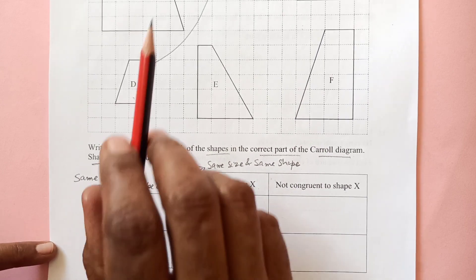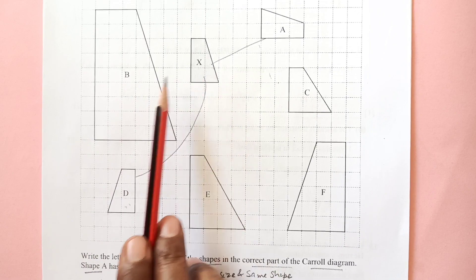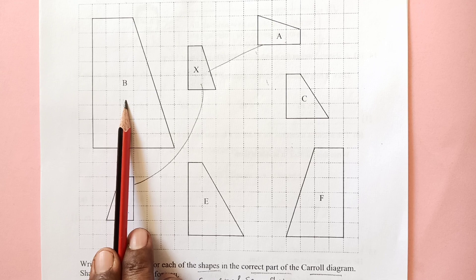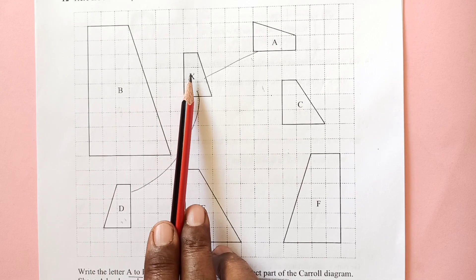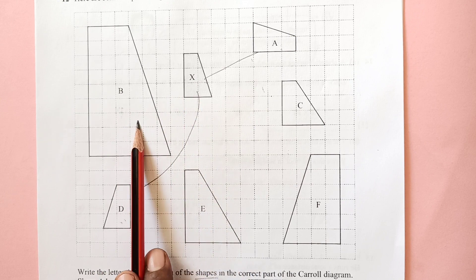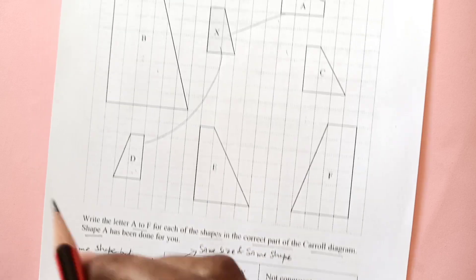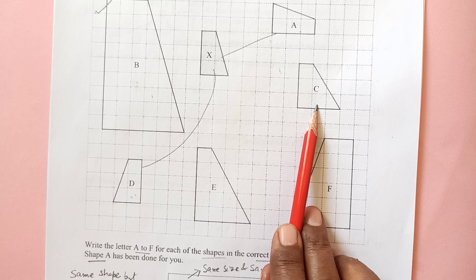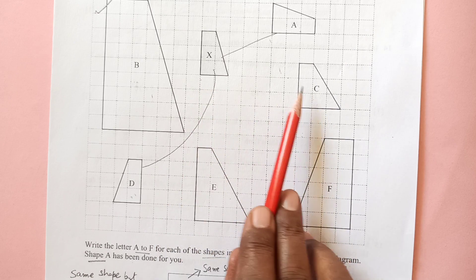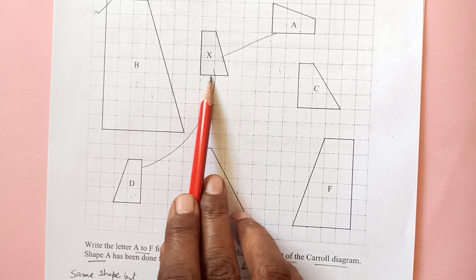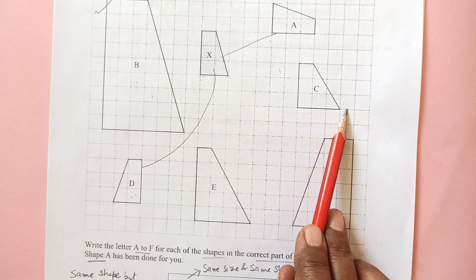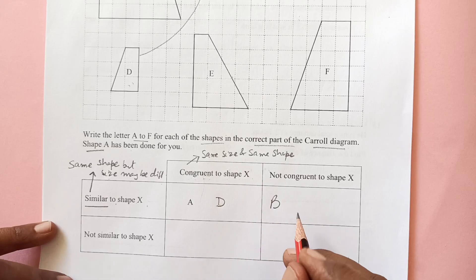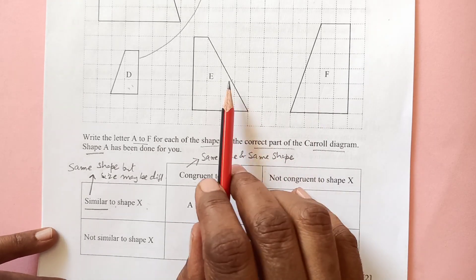Not congruent to shape X - congruent means the size is different. B is actually similar, this shape is similar but it's a different size, so that is not congruent. B will come here. Then C, if you see, C is not similar to this because we have here 2 squares and here we have 3 squares, but on the other side we have 3 and 3. So they are not changing in the same shape and ratio. C will come here.